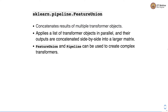The second construct is feature union. Feature union concatenates the results of multiple transformer objects. It applies a list of transformer objects in parallel and their outputs are concatenated side by side into a larger matrix. Feature union and pipeline can be combined to create complex transformers.